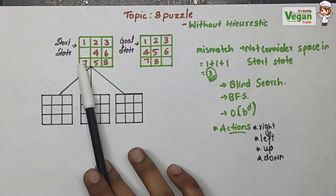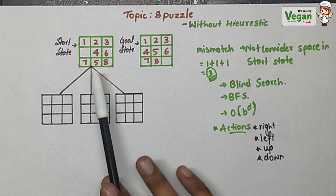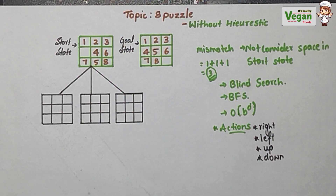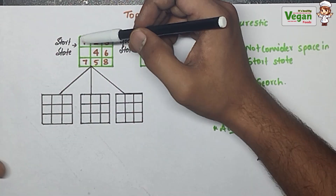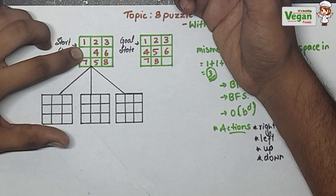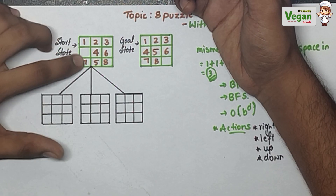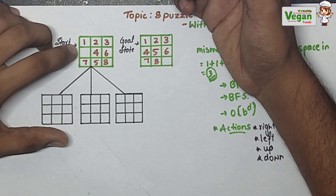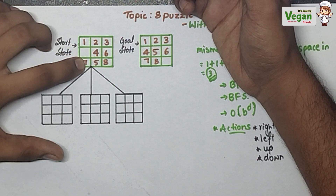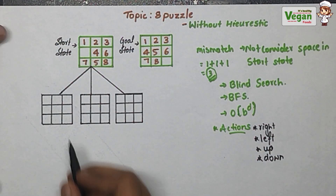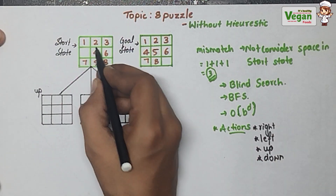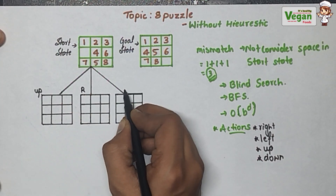Now looking at the question — this is the start state and this is the goal state. From the start state we must reach the goal state. The space is here, so the space can replace values from the upside, right side, and downside. There is no value on the left side. Let's write the three possibilities: upside, right side, and downside.